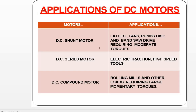Now we will look at the applications. DC shunt motors are used in pumps and fans where constant speed is required. DC series motors are used in high-speed tools and electric traction. The compound motor is used in applications that require both high starting torque and a variable load, and it is widely used in industry.